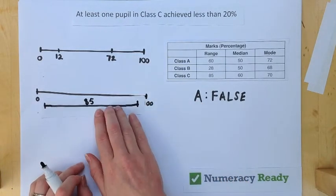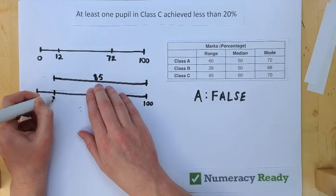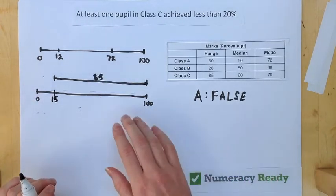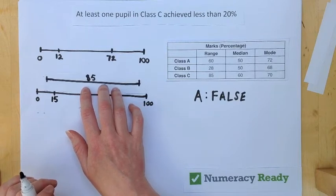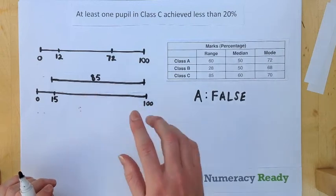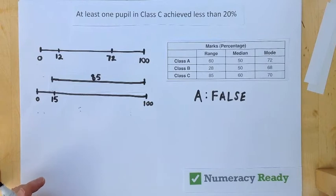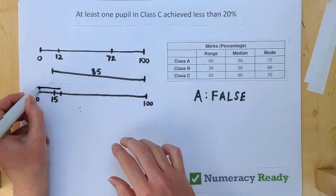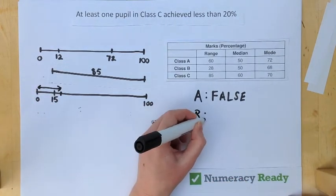Now, even if someone scored 100, that would mean that the lowest mark would be 15. Our range, if someone scored less than 100, would only give lower marks than 15. So applying that to our statement, it is true that at least one pupil in Class C must have achieved less than 20%, which is in this area here. B is true.